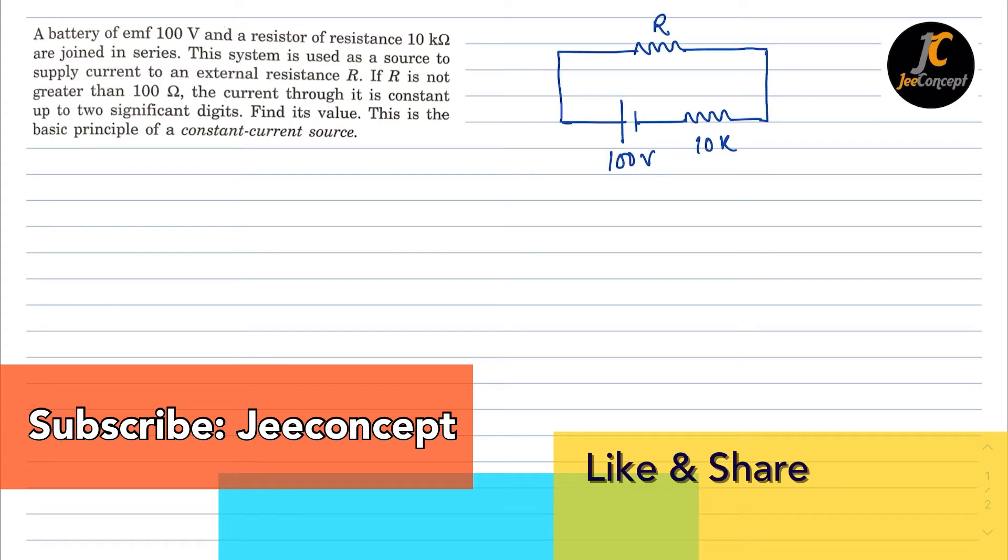Hello everyone, in this question a battery of EMF 100 volt and a resistor of resistance 10 kΩ are joined in series. This system is used as a source to supply a current to an external resistance R.